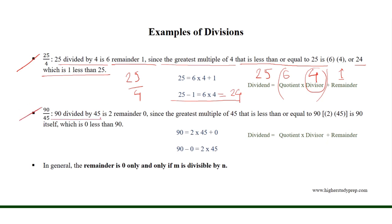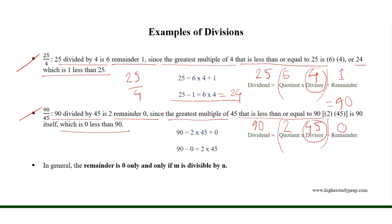90 divided by 45 is 2 remainder 0. Since the greatest multiple of 45 that is less than or equal to 90 is 90 itself, as 2 times 45 equals 90, which is 0 less than 90, as 90 minus 90 equals 0. So, in general, the remainder is 0 if and only if m is divisible by n, where m is the dividend and n is the divisor.